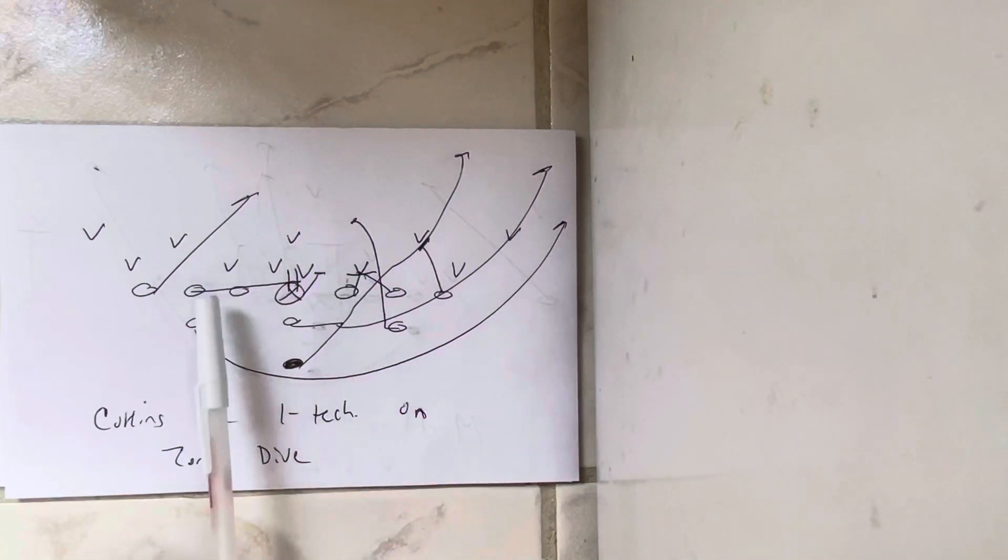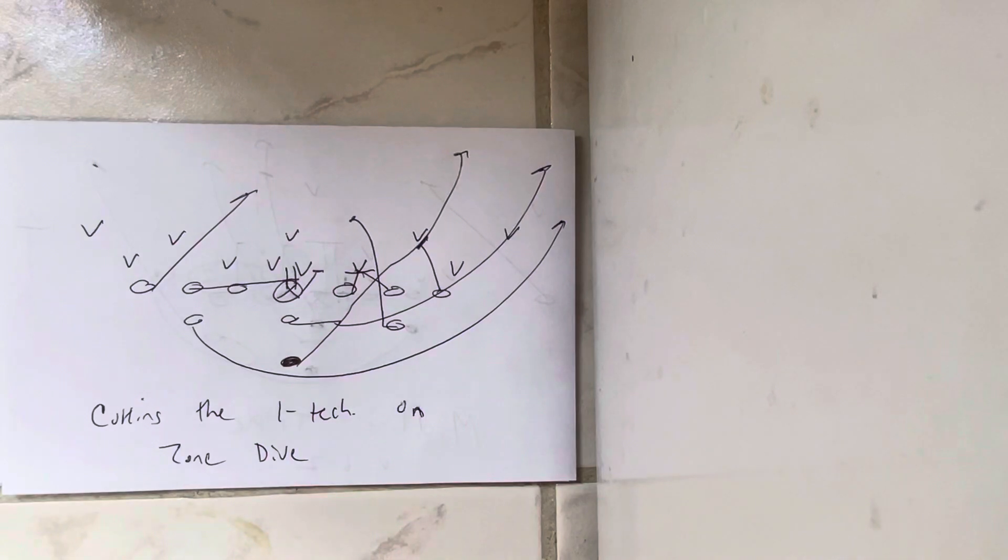And now he's in the scoop track because the backside guard sprints his belly button through the center. The backside tackle sprints his belly button through the backside guard. The backside receiver comes up. Because what you're able to do from there is now you can, if it's a 2-I, you can still, whatever it's a 2-I, 2-I or 3.